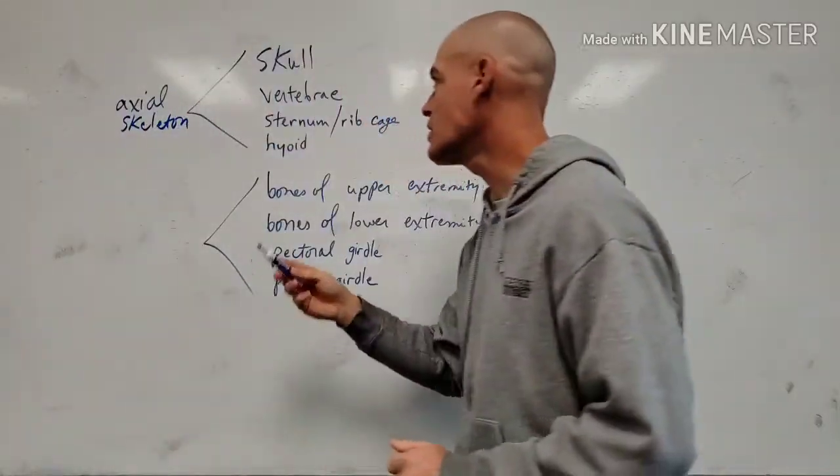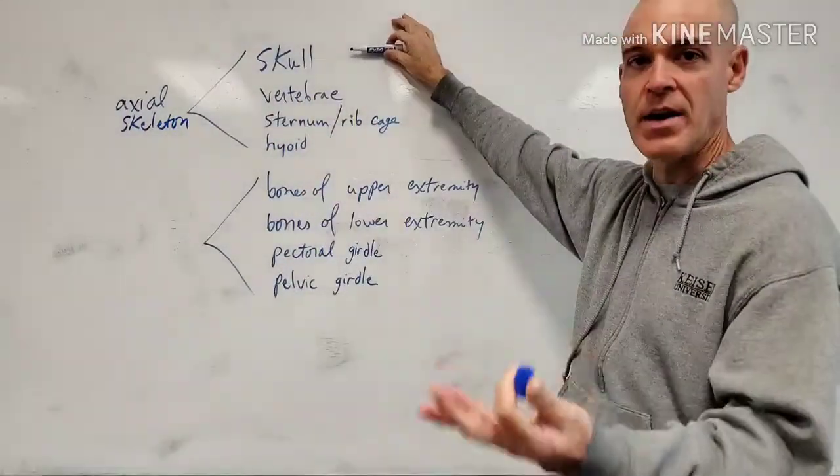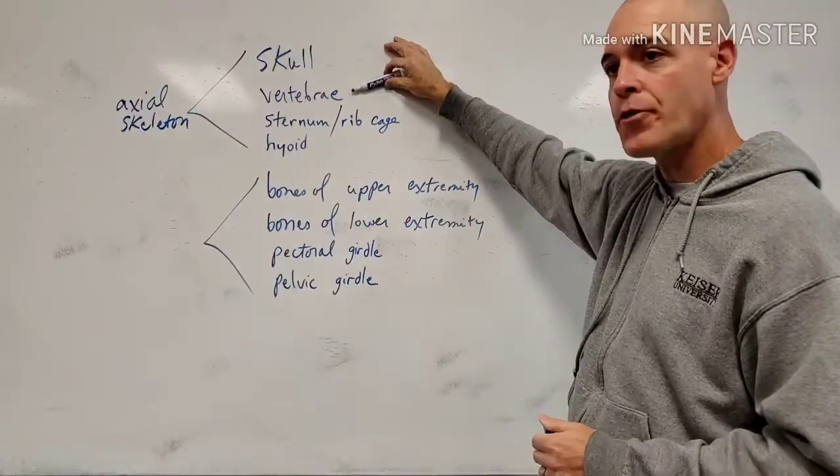The axial skeleton consists of all the bones of the skull, cranial and facial bones, and all the vertebrae.